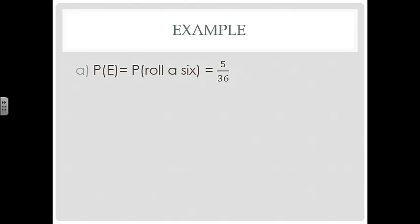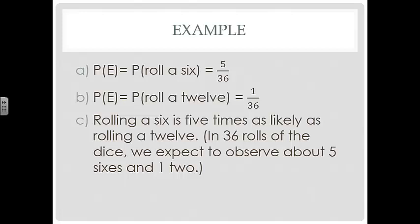You could get a 6 by rolling a 1 and a 5, a 5 and a 1, a 3 and a 3, a 2 and a 4, and a 4 and a 2. The probability of rolling a 12 is just a pair of 6s, so it's 1 out of 36. So rolling a 6 is 5 times as likely as rolling a 12. In 36 rolls of the dice, we expect to observe about 5 6s and 1 12.